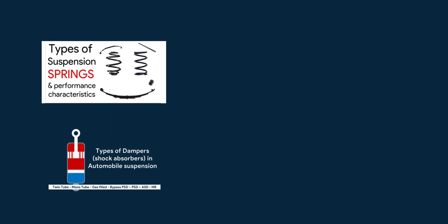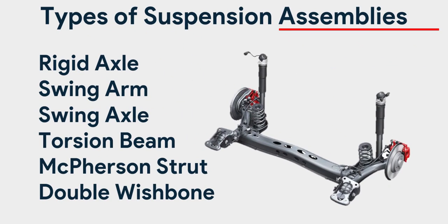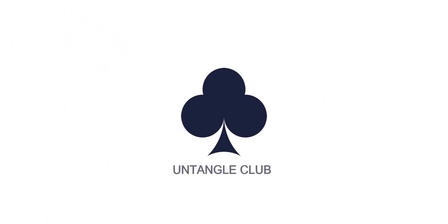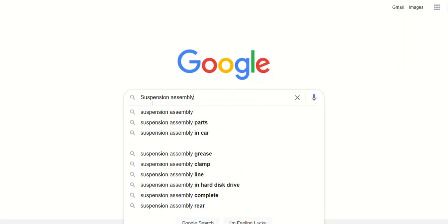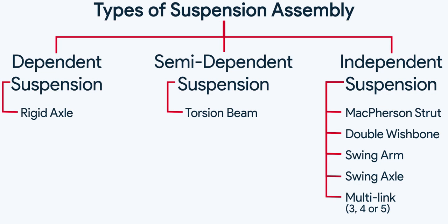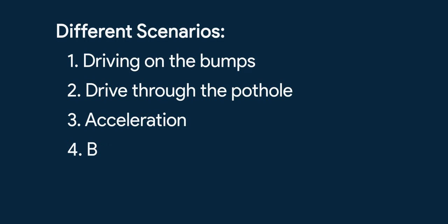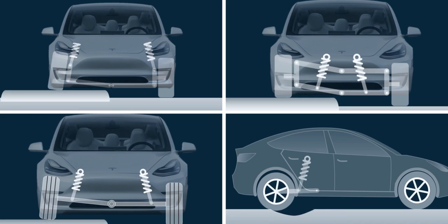In the last two videos of the suspension series, we talked about the suspension spring types and shock absorber types. In this one, let's untangle the suspension assemblies. Rather than just jumping into the types of suspension assemblies and comparing them by advantages and disadvantages, we'll first see the vehicle dynamics required in different scenarios, and further to which we'll see how each suspension assembly satisfies those requirements.